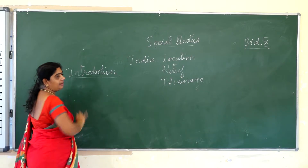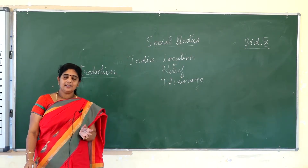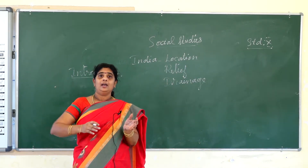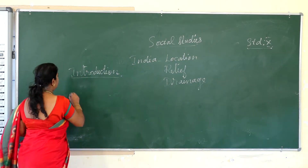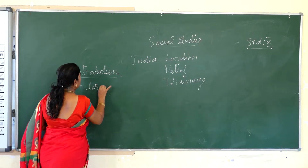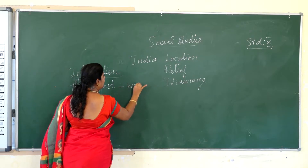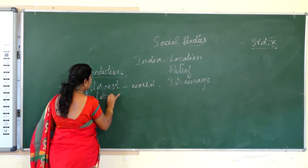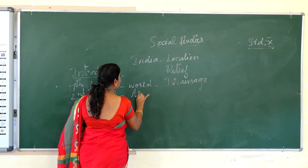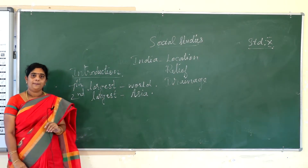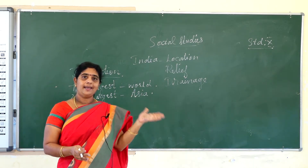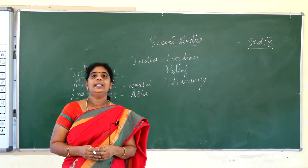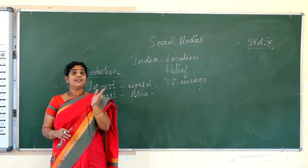India is the seventh largest country in the world, and in Asia it is the second largest. India is located on the southern part of Asia, and it is separated by the Himalayas from the rest of the continent.